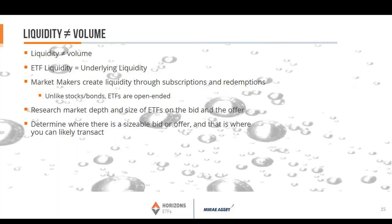It's really important to understand that ETF liquidity comes from the liquidity of the underlying. The market makers create and maintain that liquidity through subscriptions and redemptions to and from the ETF company. What you want to do is research the market depth and the size of the ETF on the bid and offer — how big is the underlying market? The TSX 60 is huge; Canadian high-yield bonds would be smaller. Determine where there's a sizable bid or offer and that's where you can likely transact.